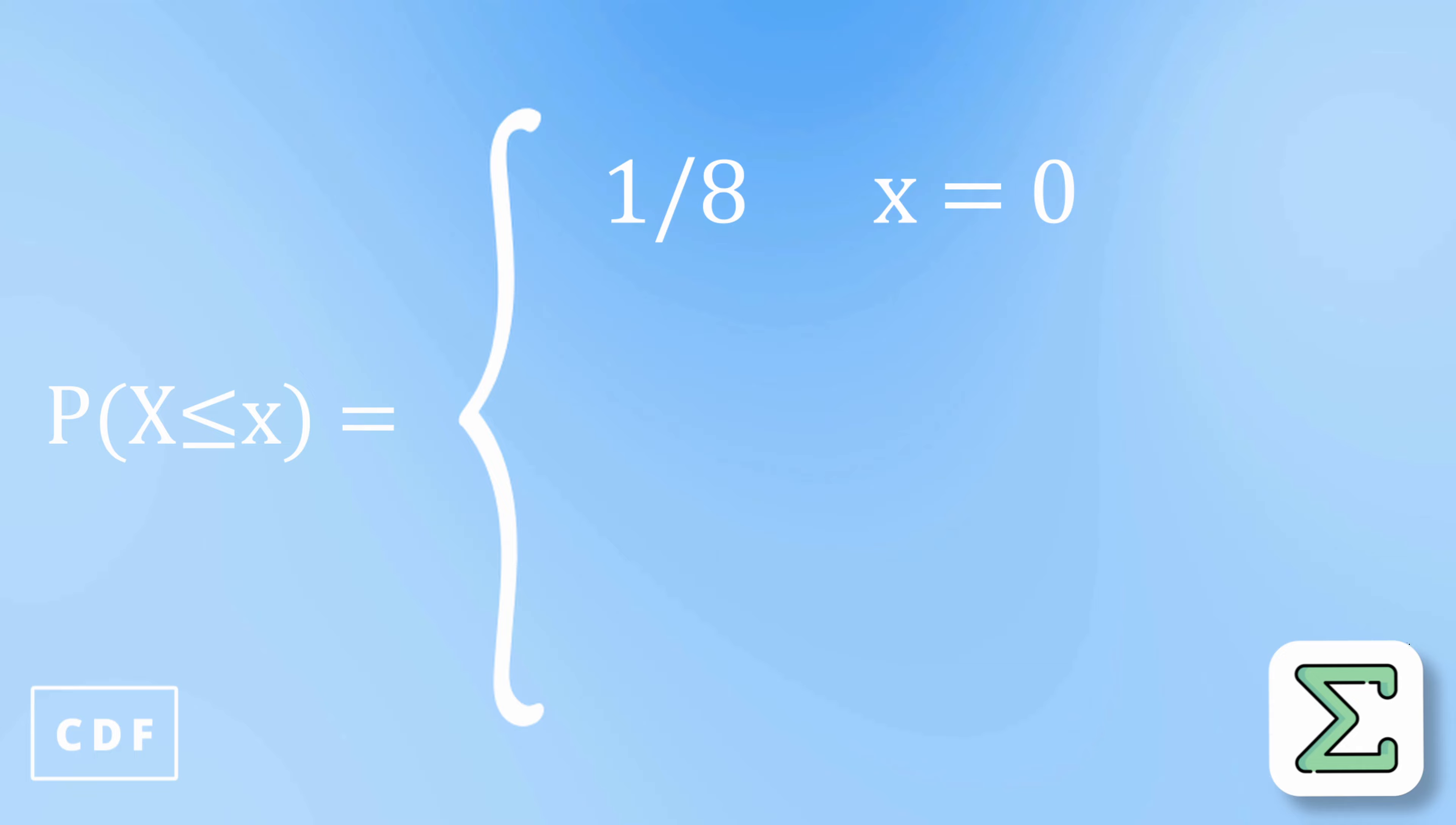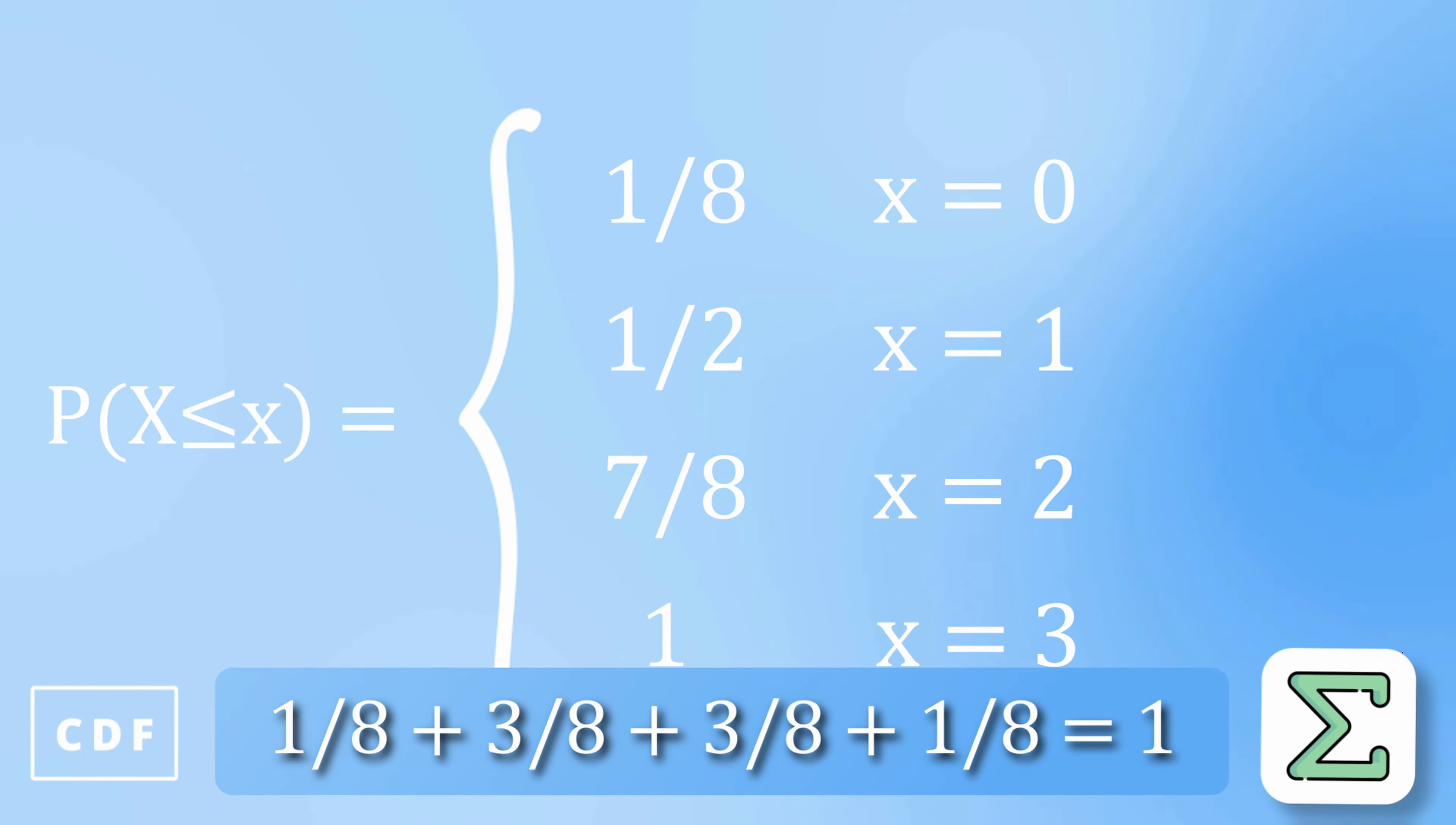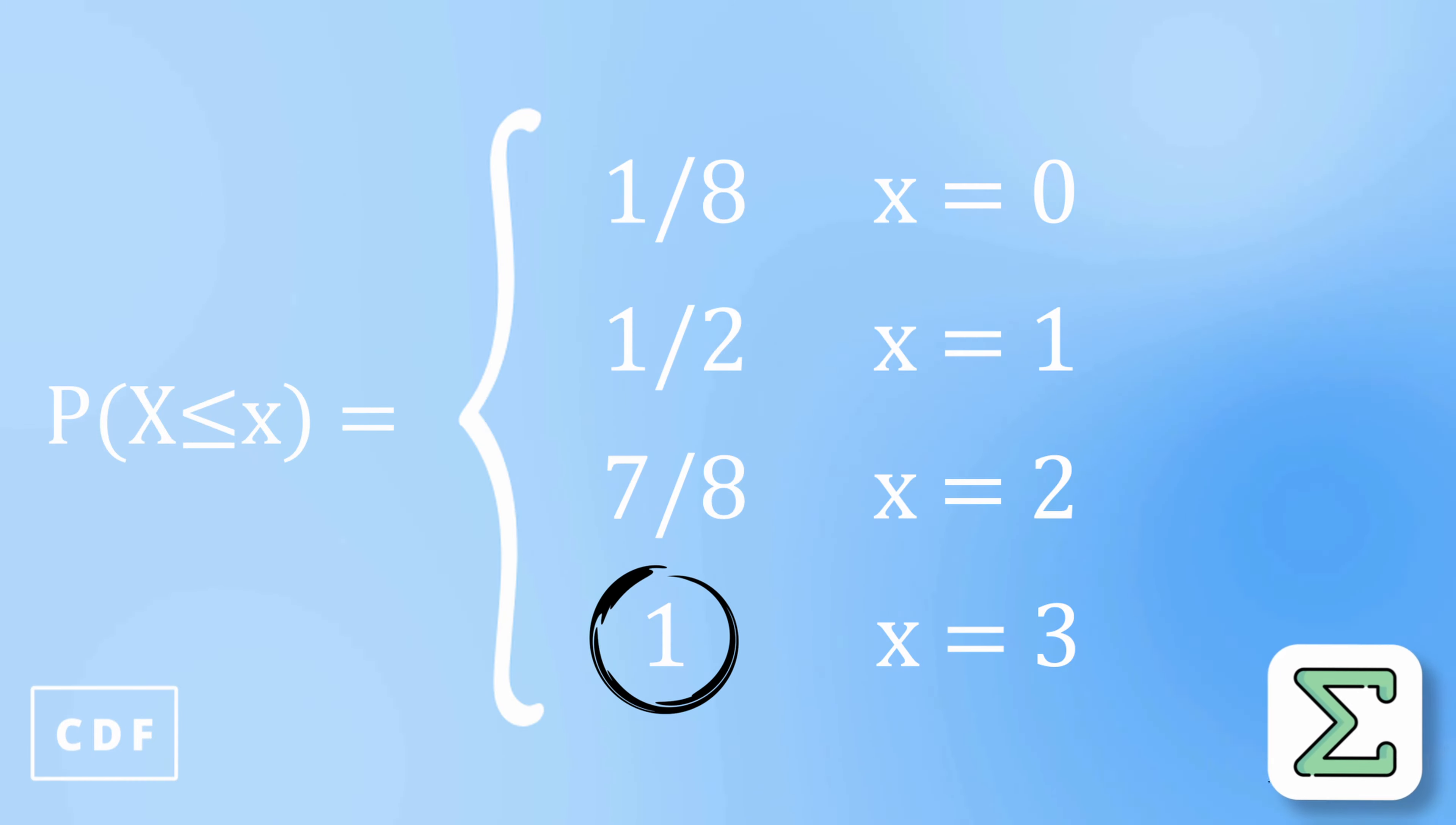the probability that x is less than or equal to 0 is 1/8. The probability that x is less than or equal to 1 is 1/8 plus 3/8. The probability that x is less than or equal to 2 is 1/8 plus 3/8 plus 3/8. And the probability that x is less than or equal to 3 is 1/8 plus 3/8 plus 3/8 plus 1/8. By definition, CDFs are always going to be non-decreasing, and the probability for the largest value is always going to be 1.